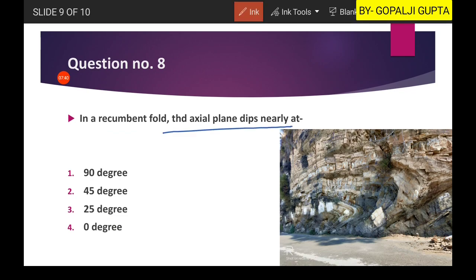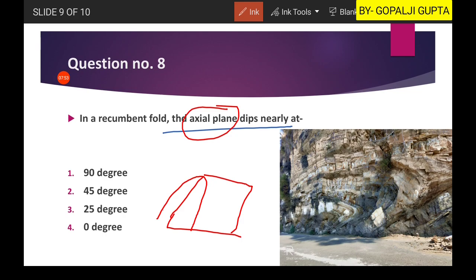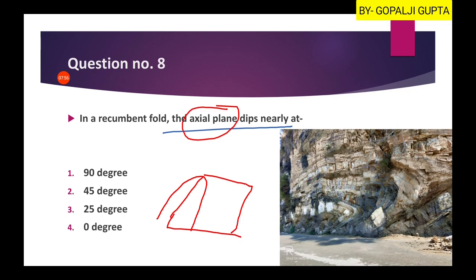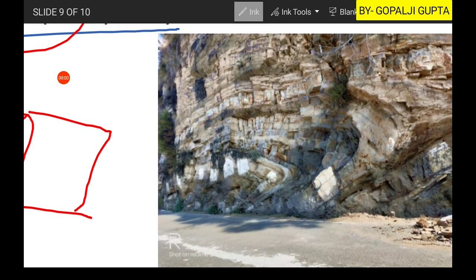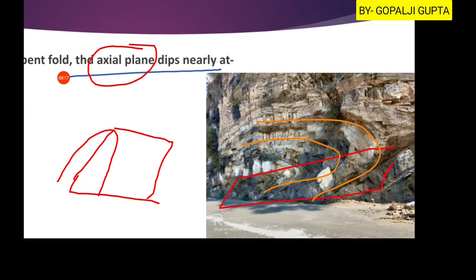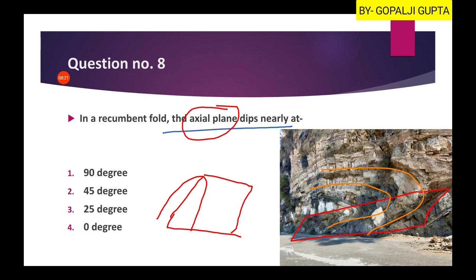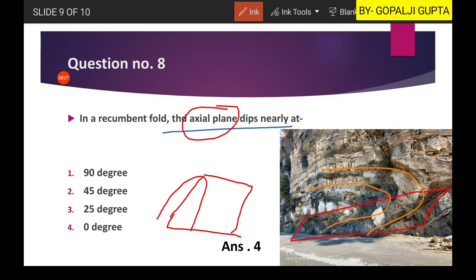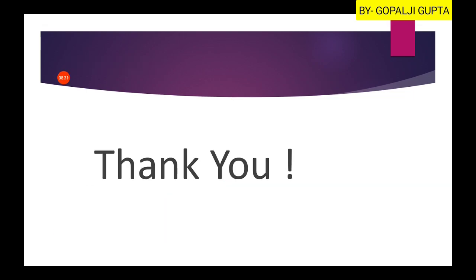Question eight: in a recumbent fold, the axial plane dips nearly at... As you can see in this diagram, in a recumbent fold the axial plane is nearly horizontal and the limbs are also horizontal. This picture is taken from the Kumaon Himalayan region showing a large-scale fold. So the fourth option is our right answer: for a recumbent fold, the axial plane dips at zero degrees. That's all for today — thank you! In the next video we will see some more structural geology questions.